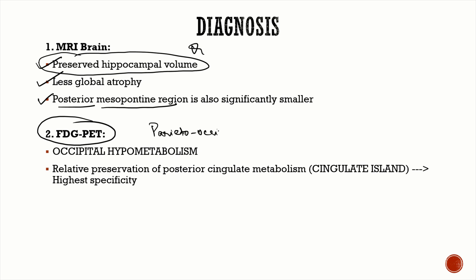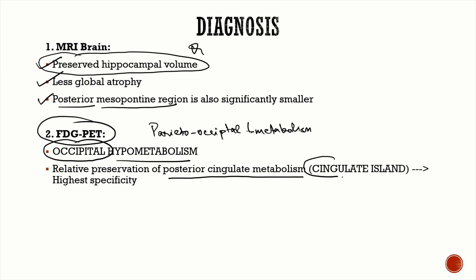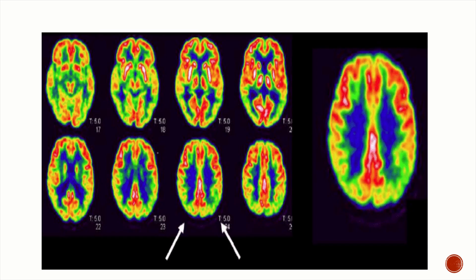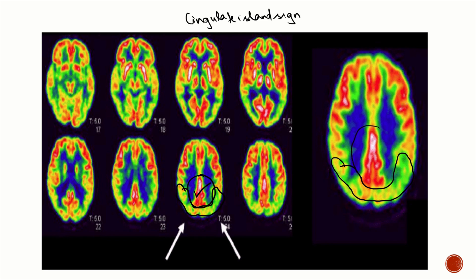On FDG-PET, there is predominant parieto-occipital hypometabolism, predominantly occipital hypometabolism, but with relative preservation of the posterior cingulate metabolism. This is known as the cingulate island sign — very important MCQ with high specificity for diagnosing Lewy body dementia. On the FDG-PET image, you can see occipital hypometabolism with relative preservation of the posterior cingulate cortex, confirming the cingulate island sign.